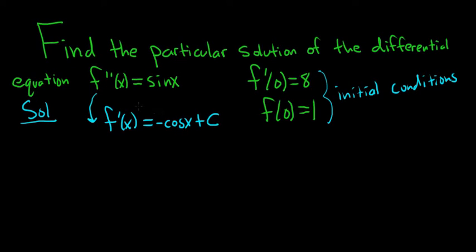The easiest way is to integrate this one time and then use your first initial condition to find C. After you find C, you plug it back in. Then you integrate again and use your second initial condition to find C. So we integrate it one time.